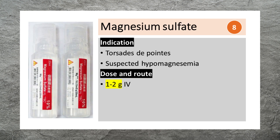Magnesium sulfate is used to treat torsades de pointes or suspected hypomagnesemia. It can be given as 1-2 g IV over 15-20 minutes.